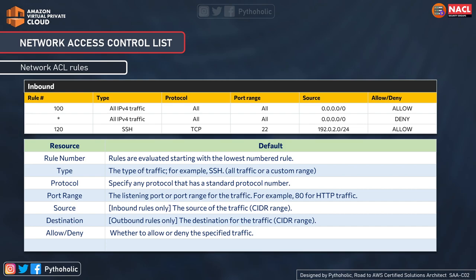The protocol can be specified, such as TCP. The port range specifies the listening port — like 443, 22, or 80 for HTTPS, SSH, and HTTP respectively. Source is for inbound rules only — the source of incoming traffic as an IP or CIDR range. Destination is for outbound rules only — the destination for outgoing traffic as a CIDR block. Finally, allow or deny specifies whether to allow or deny the rule.